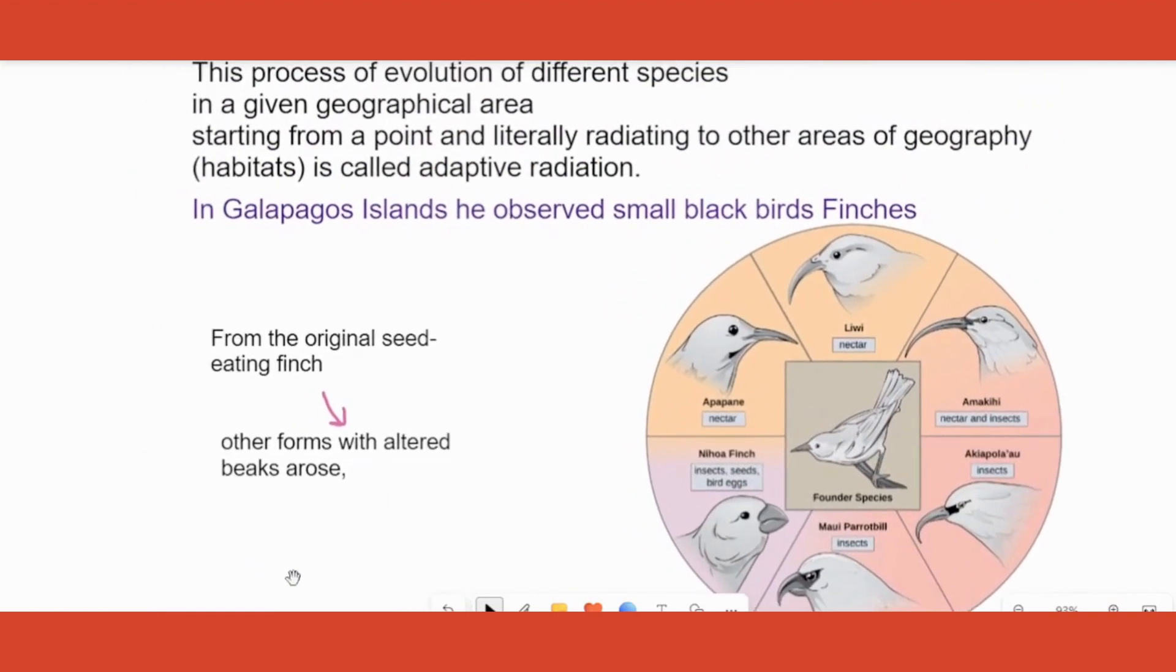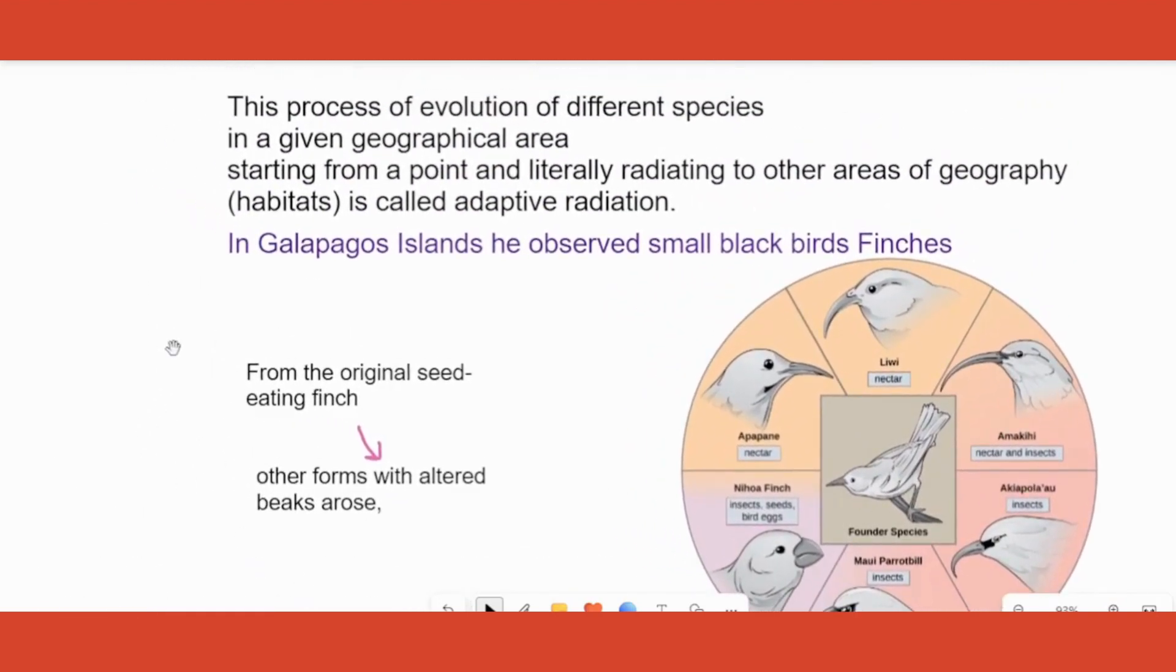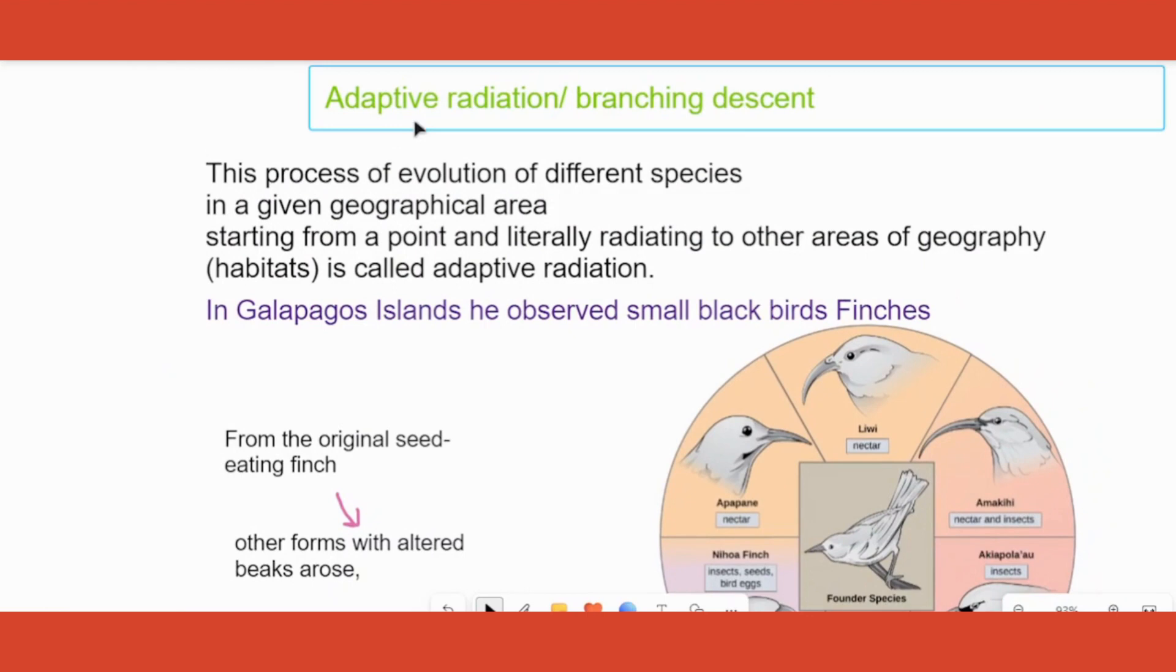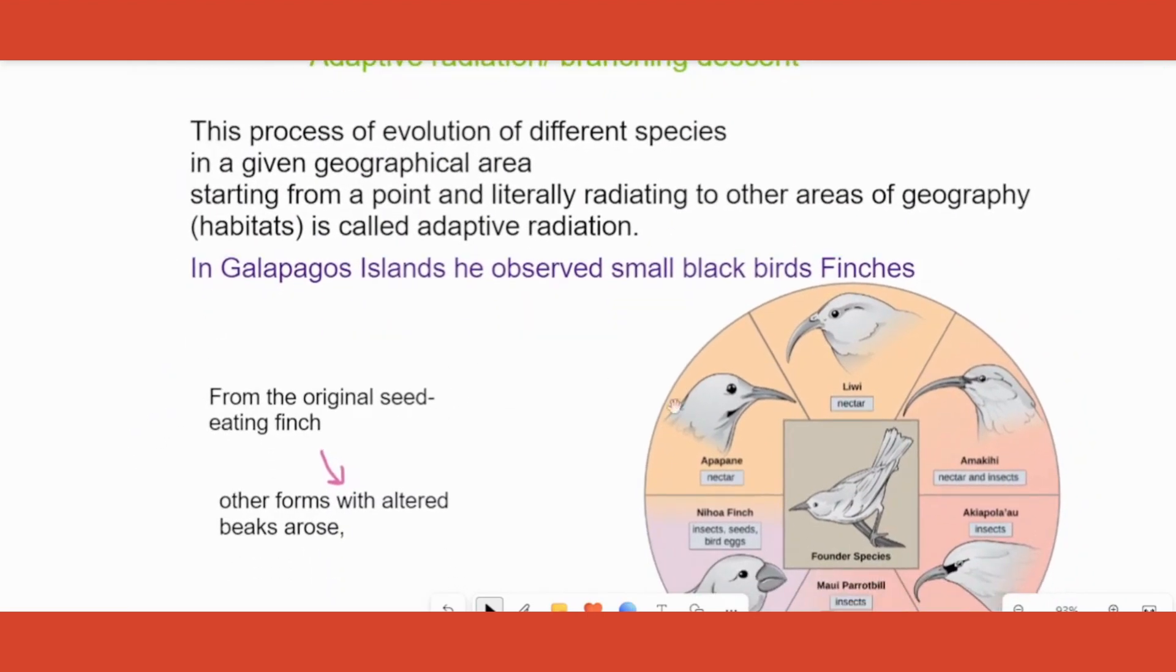stay tuned and be attentive and please make notes. So what exactly is adaptive radiation? Adaptive radiation basically means from one species many species evolving in a single isolated area depending on either food habits or the habitat